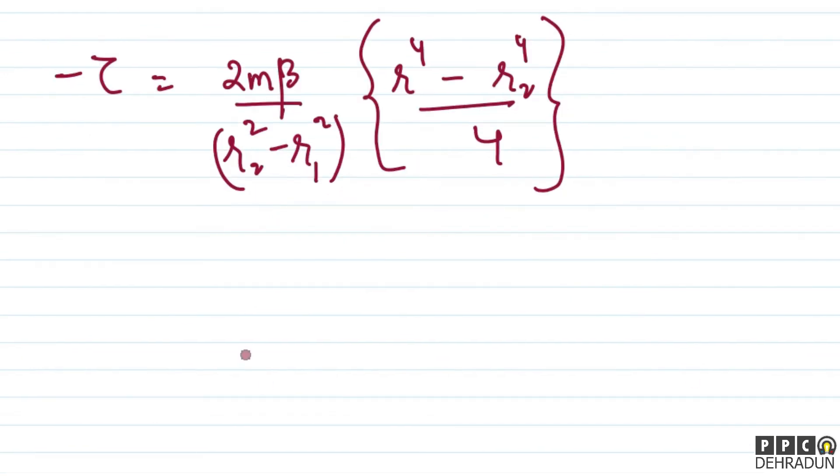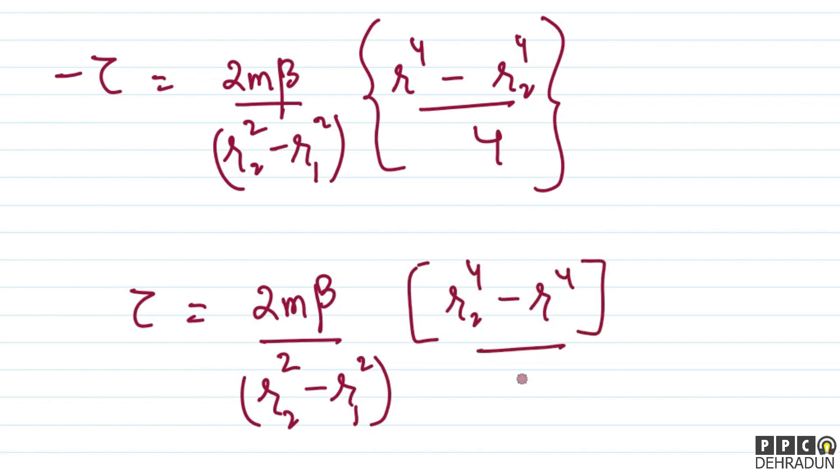So, if we further simplify this, finally the torque we get is: 2m beta upon r2 to the power 2 minus r1 to the power 2, multiplied by r2 to the power 4 minus r to the power 4 upon 4. So this 4 becomes 2 when divided by 2. So, this is our final answer. We have found torque as a function of small r.